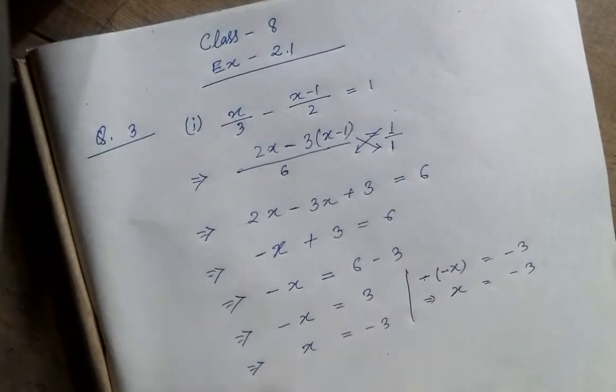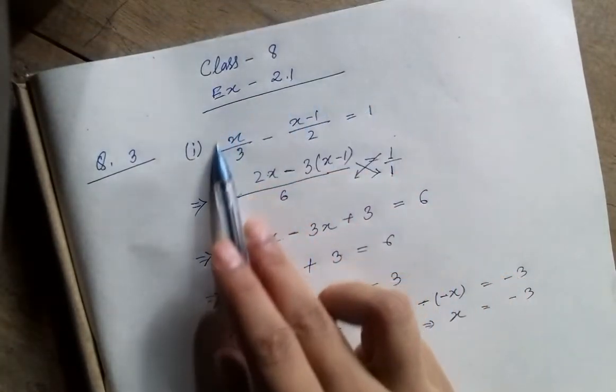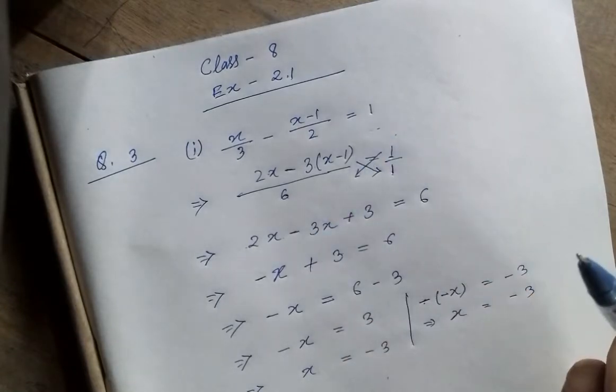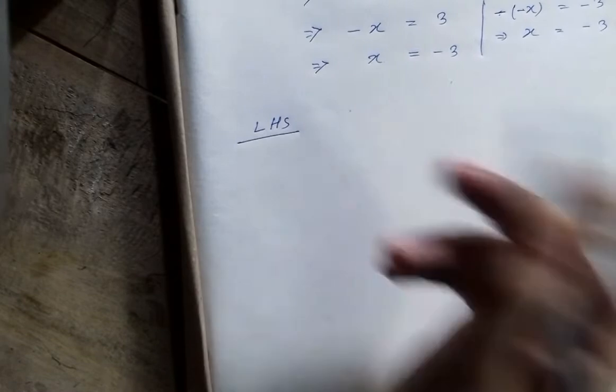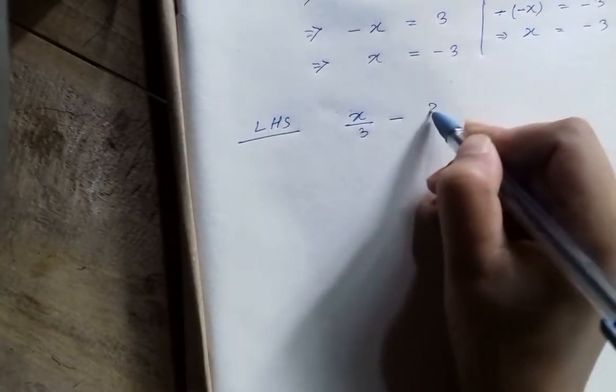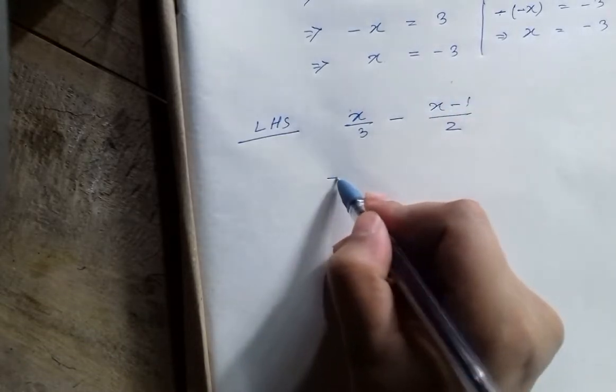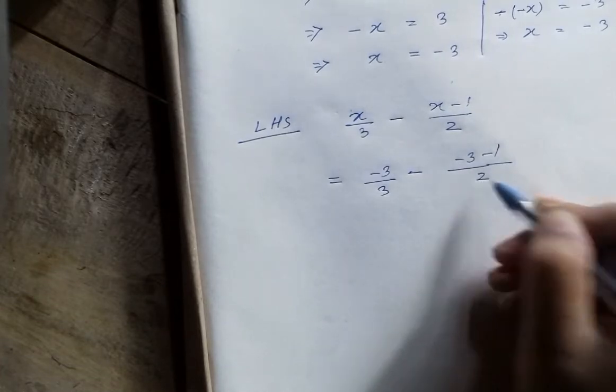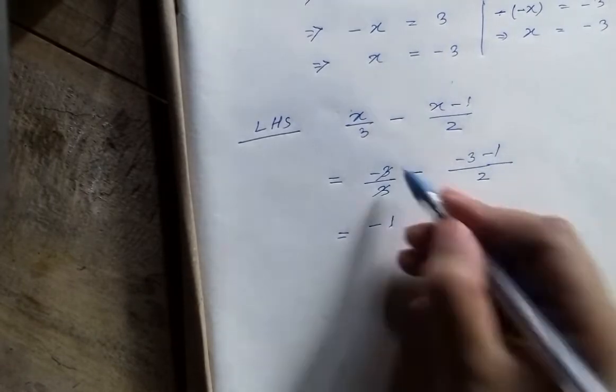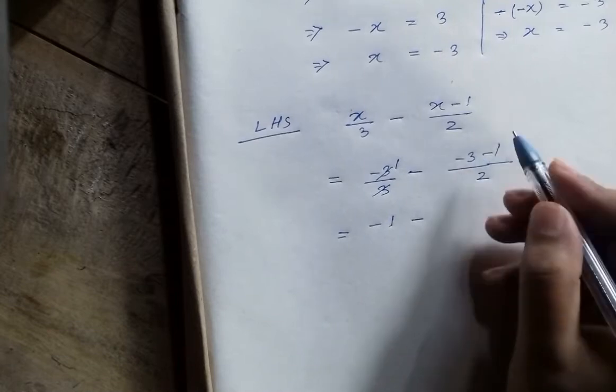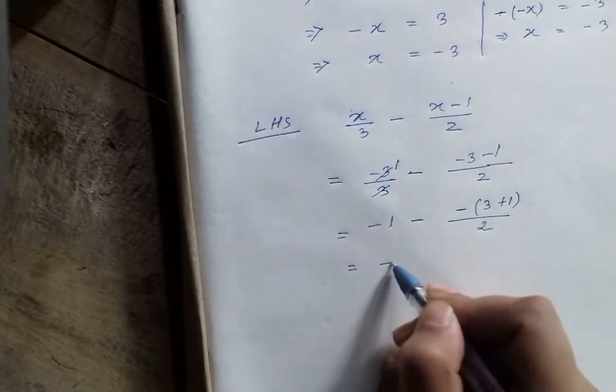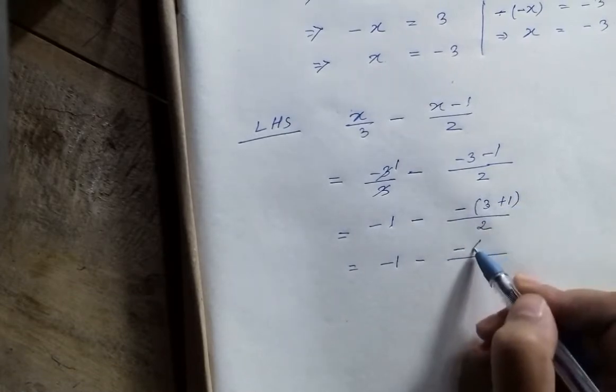I will write the left hand side, x by 3, minus x minus 1 divided by 2. This is x or height and minus 3. Minus 3 divided by 3 minus minus 3 minus 1 divided by 2. Minus 3 and 3 cancel 1. Minus 2 and minus 1. Minus 3 minus 2. Minus 3 minus 3 minus 1, minus 2 minus 3 plus 1. Minus 1 minus 2 minus 3 plus 1 minus 2 divided by 2.